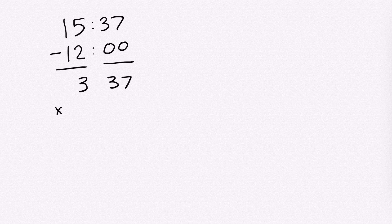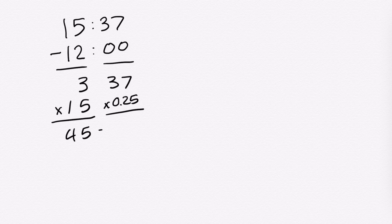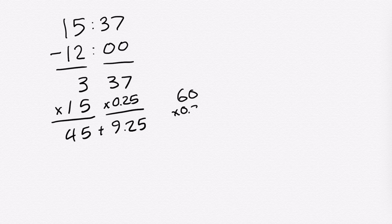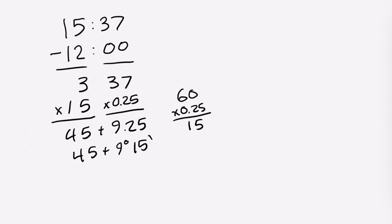Each hour is 15 degrees, and each minute is 0.25 degrees. So you multiply the hours by 15 and the minutes by 0.25. The hours: 3 times 15 gives us 45. The minutes: 37 times 0.25 comes out to 9.25, which means 9 and a quarter degrees. Take the 0.25 and multiply by 60 to get minutes, giving us 9 degrees and 15 minutes. Then add the hour part and minute part together to get your longitude.